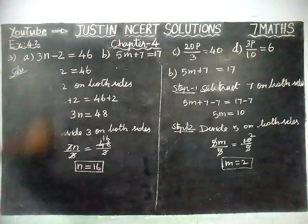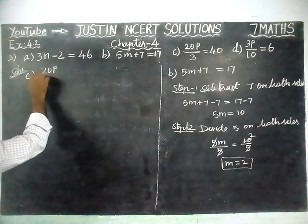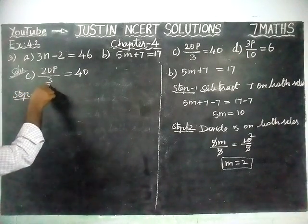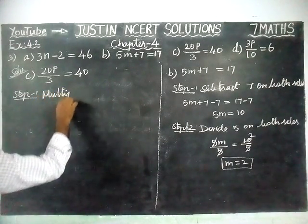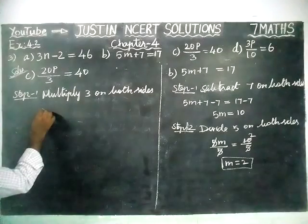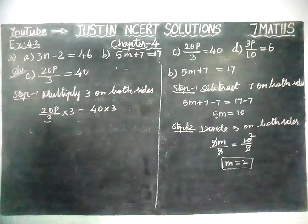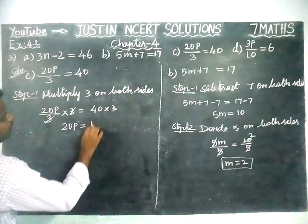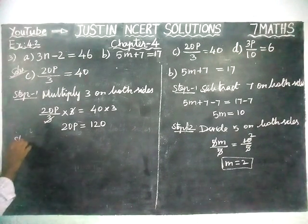Now we are going to solve part C. The equation is 20p divided by 3 is equal to 40. In step 1, we have to cancel the denominator 3, so we are going to multiply by 3 on both sides. So 20p divided by 3, multiplied by 3, is equal to 40 multiplied by 3. The 3s get cancelled, giving us 20p equal to 120.